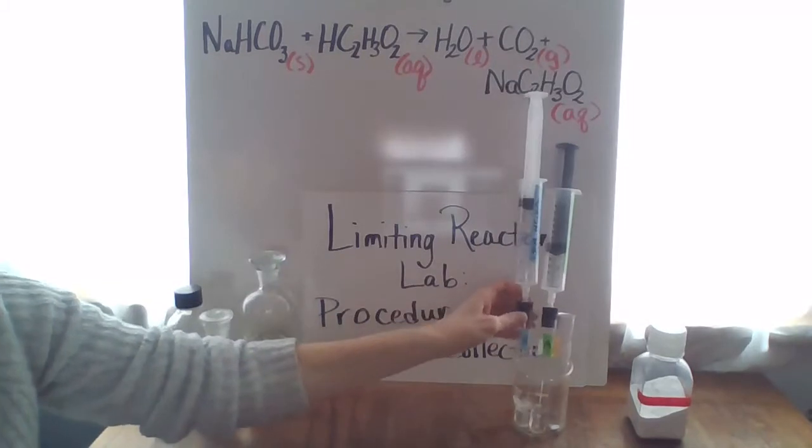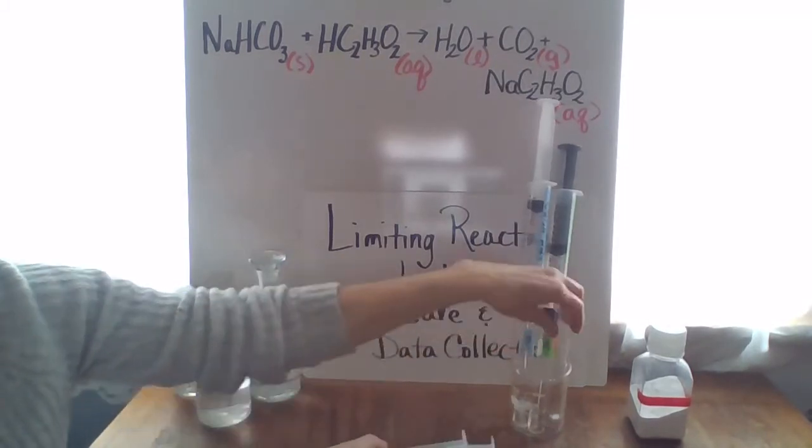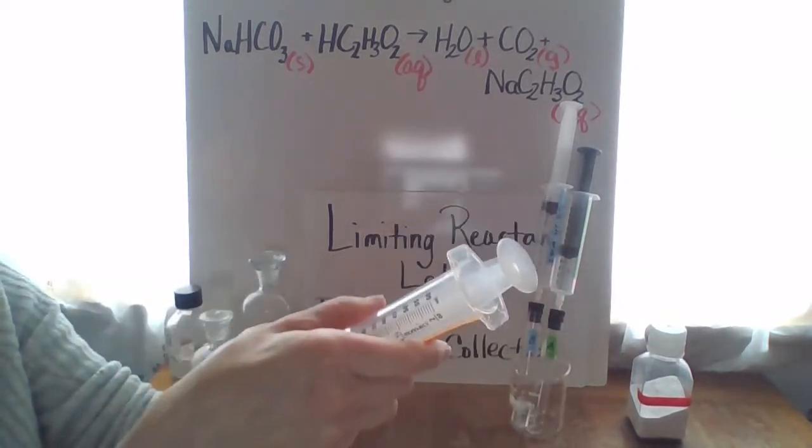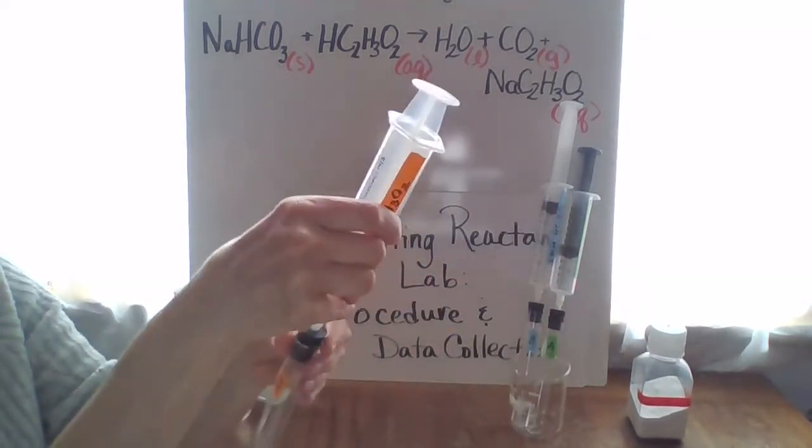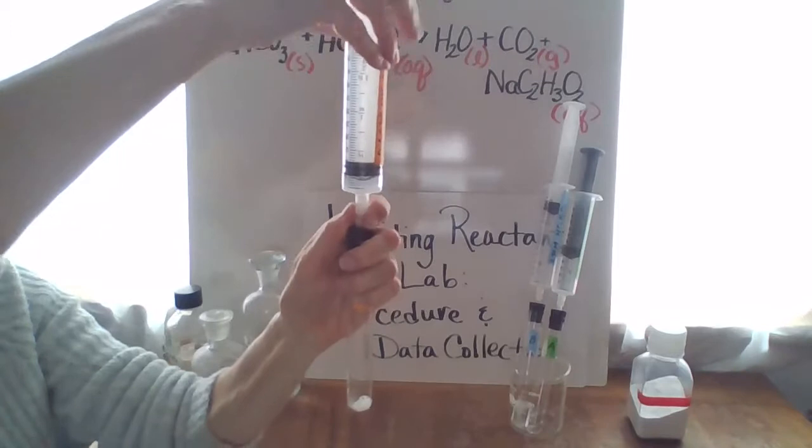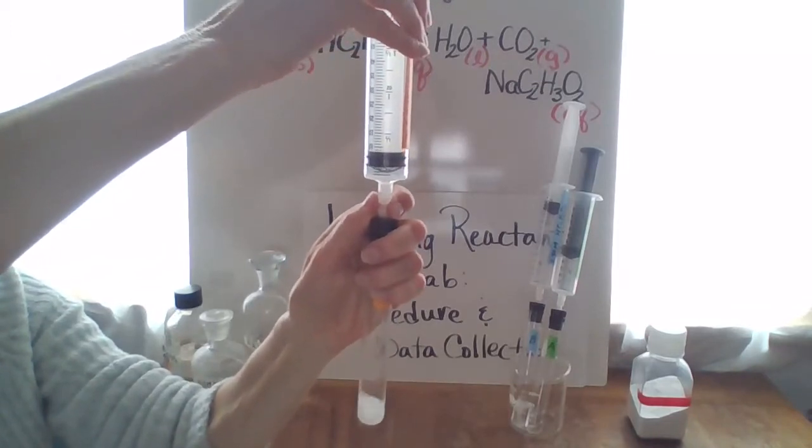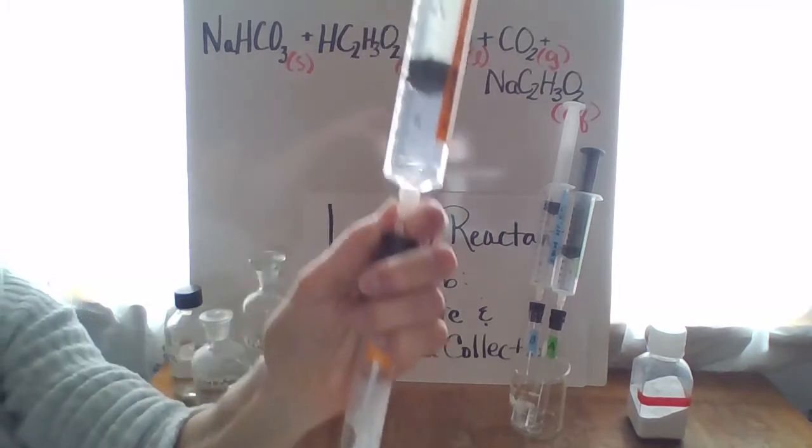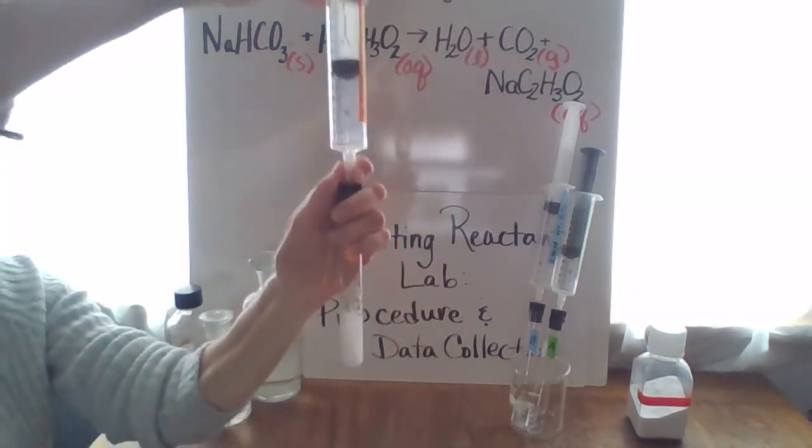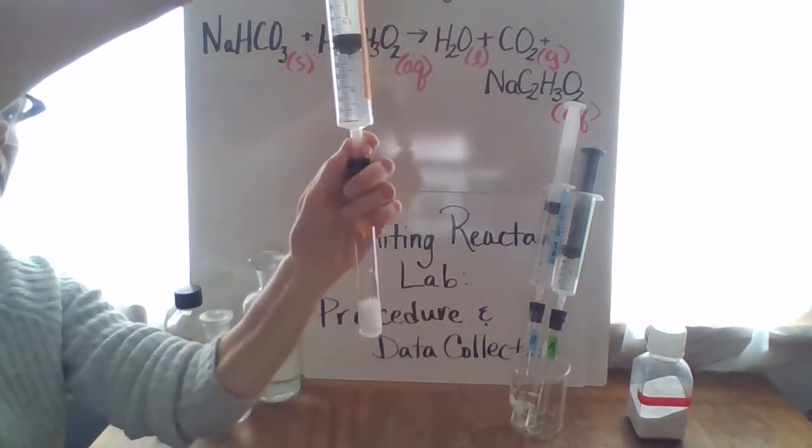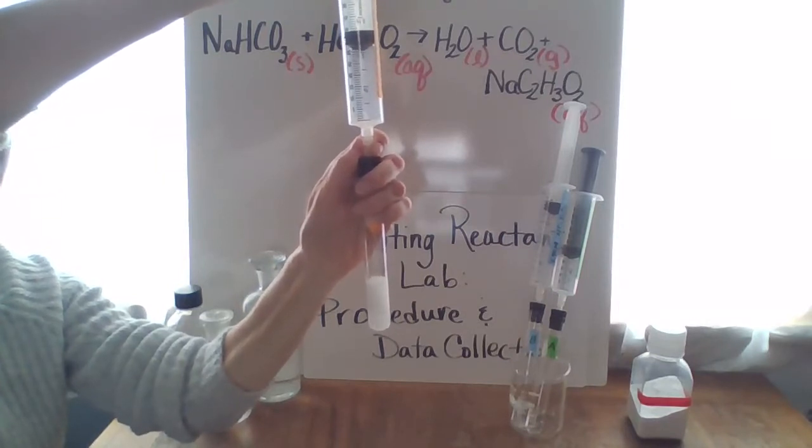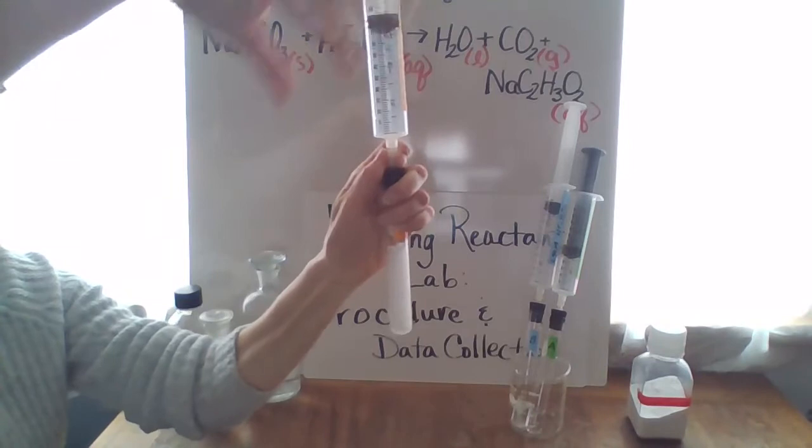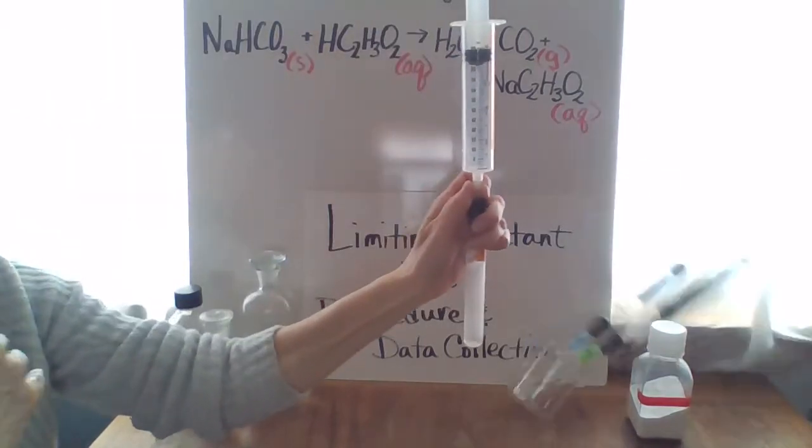And then we'll do the third one, reaction C, with the 0.6 molar reactant acetic acid. Again, see quite a response here. We've got all the acetic acid into the reaction vessel and allow that plunger then react.